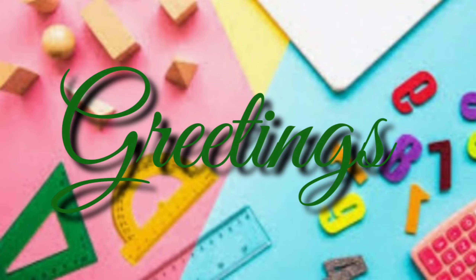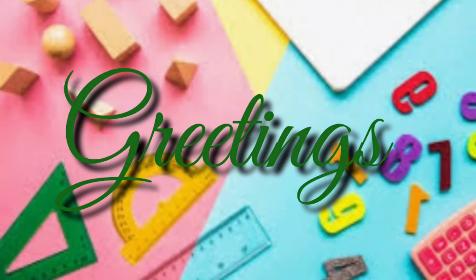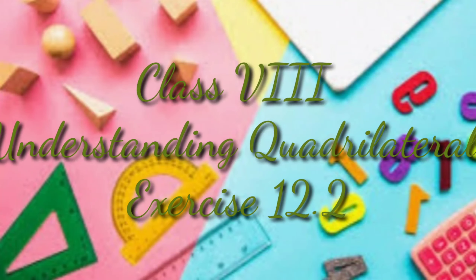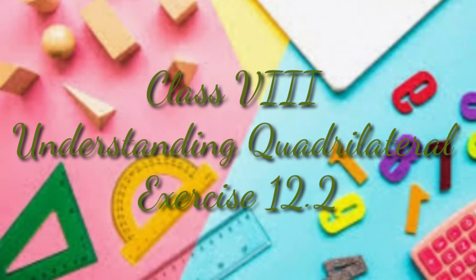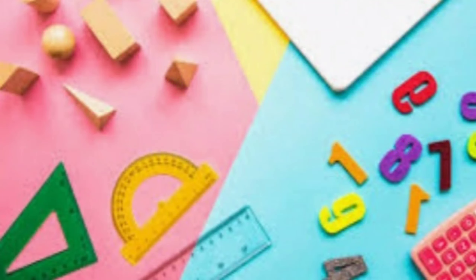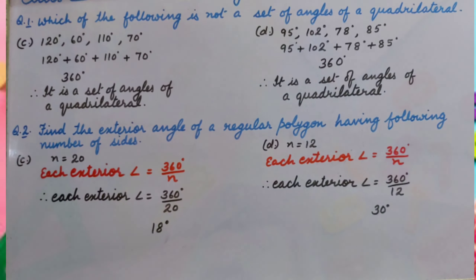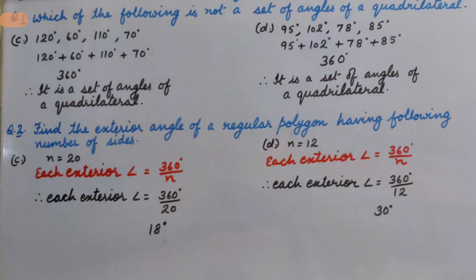Greetings of the day, my dear students. Resuming the chapter Understanding Quadrilaterals. Let's begin Exercise 12.2. Question number 1: Which of the following is not a set of angles of a quadrilateral?